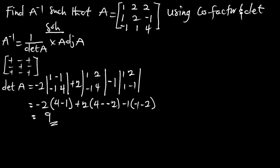That's the determinant of matrix A — we are getting 9 for that. Now we are going to find the cofactor matrix and transpose it to get our adjoint of matrix A. So we are going to find the cofactor matrix from this matrix.